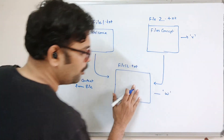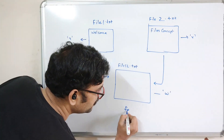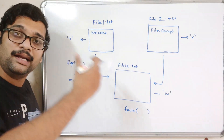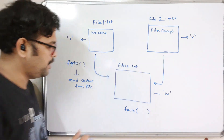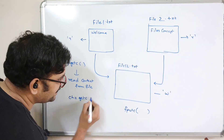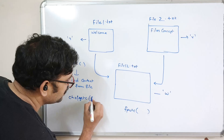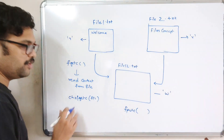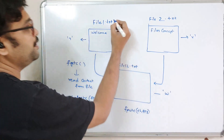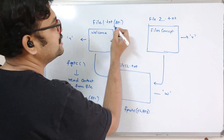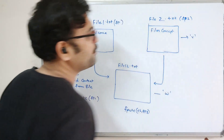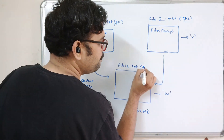For the writing operation, we use fputc. fputc writes an individual character into a file. So we read a single character using fgetc with file pointer fp1, then put that same character into file pointer fp3. Let fp1 point to file1, fp2 point to file2, and fp3 be the output file pointer.